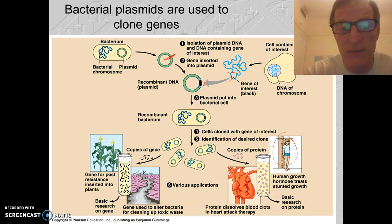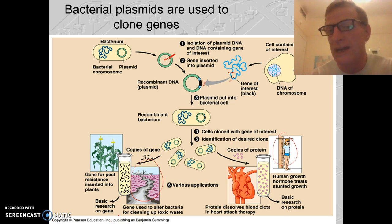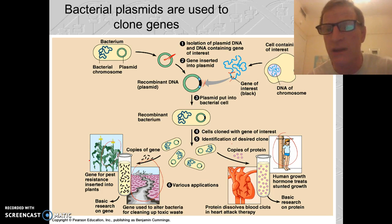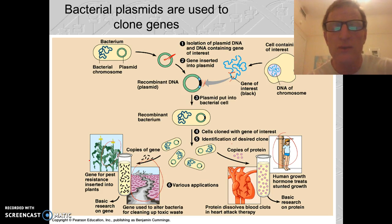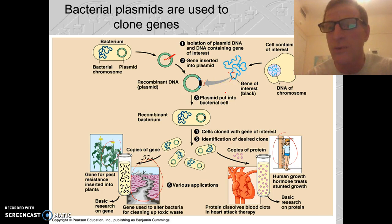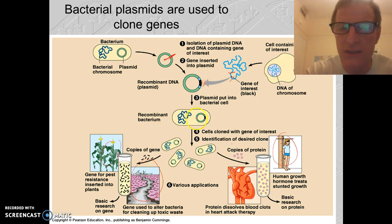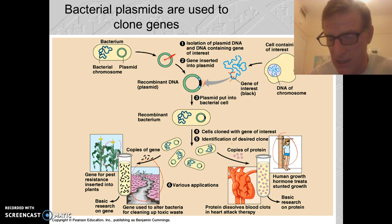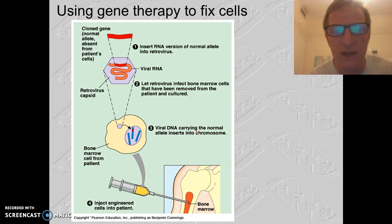We can also use genetically modified bacteria that can break down toxic spills, or copy genes that we can then insert into plants and create recombinant plants. It all comes down to identifying where these genes are, cutting them out with restriction enzymes, and then inserting them either into bacteria via plasmids, or into other organisms' DNA.